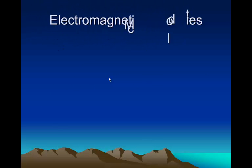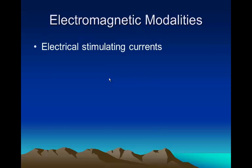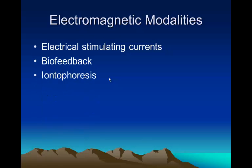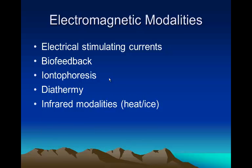Electromagnetic modalities include any kind of electrical stimulating current, any kind of biofeedback, iontophoresis, diathermy, infrared modalities — those are heat and ice — and laser. These are all examples of electromagnetic modalities.